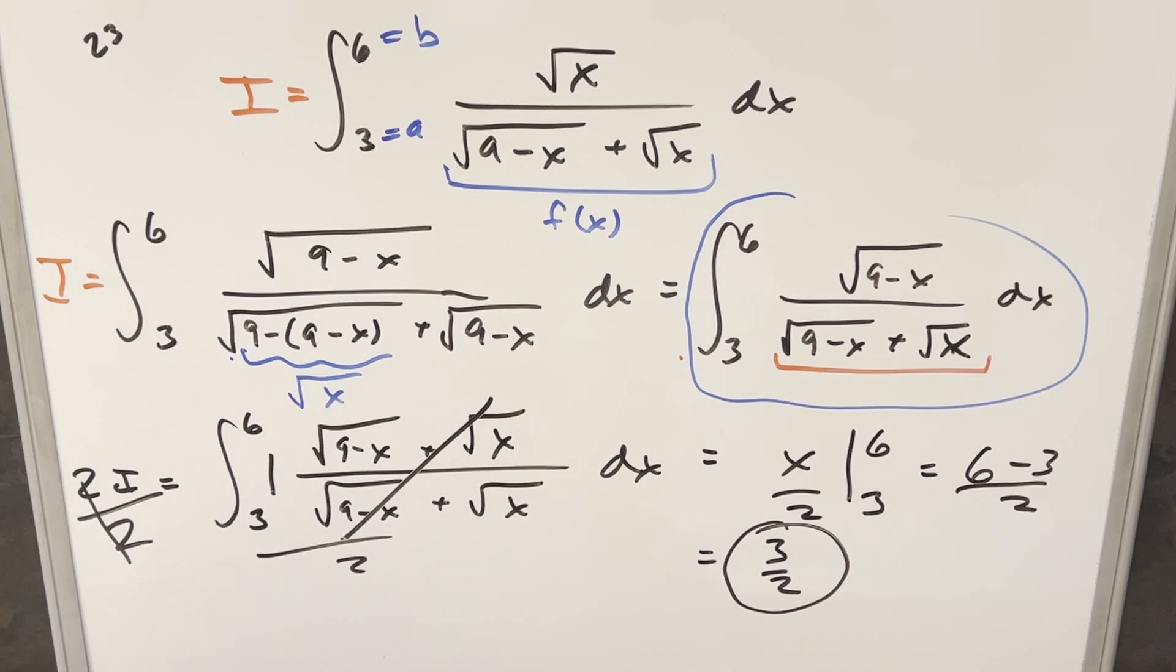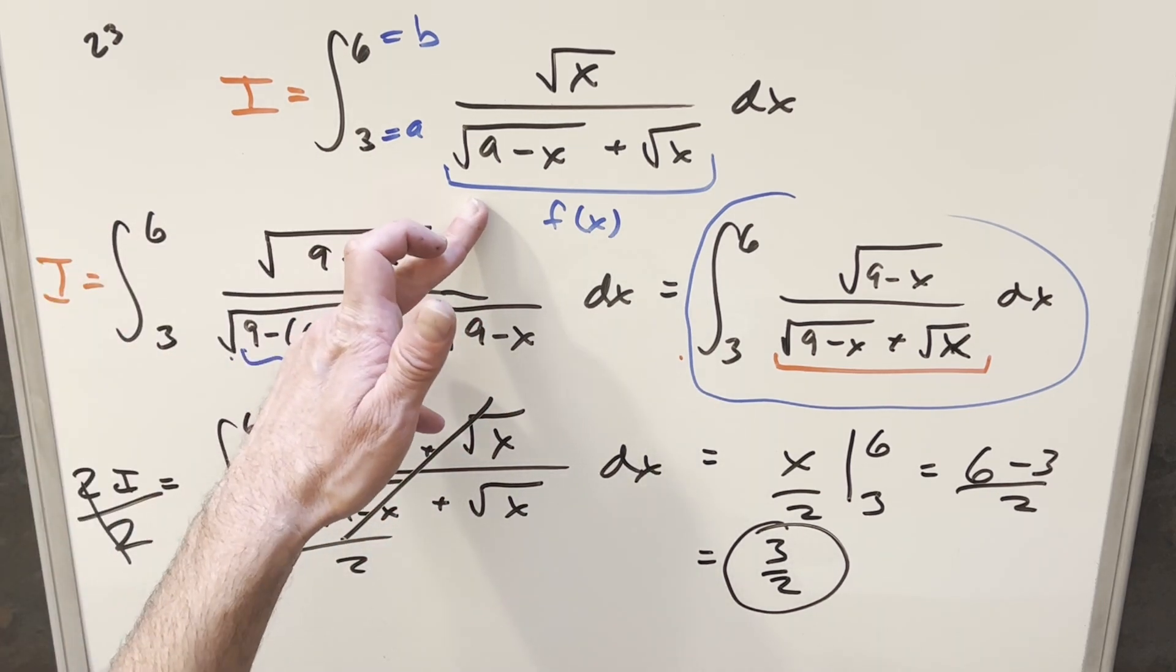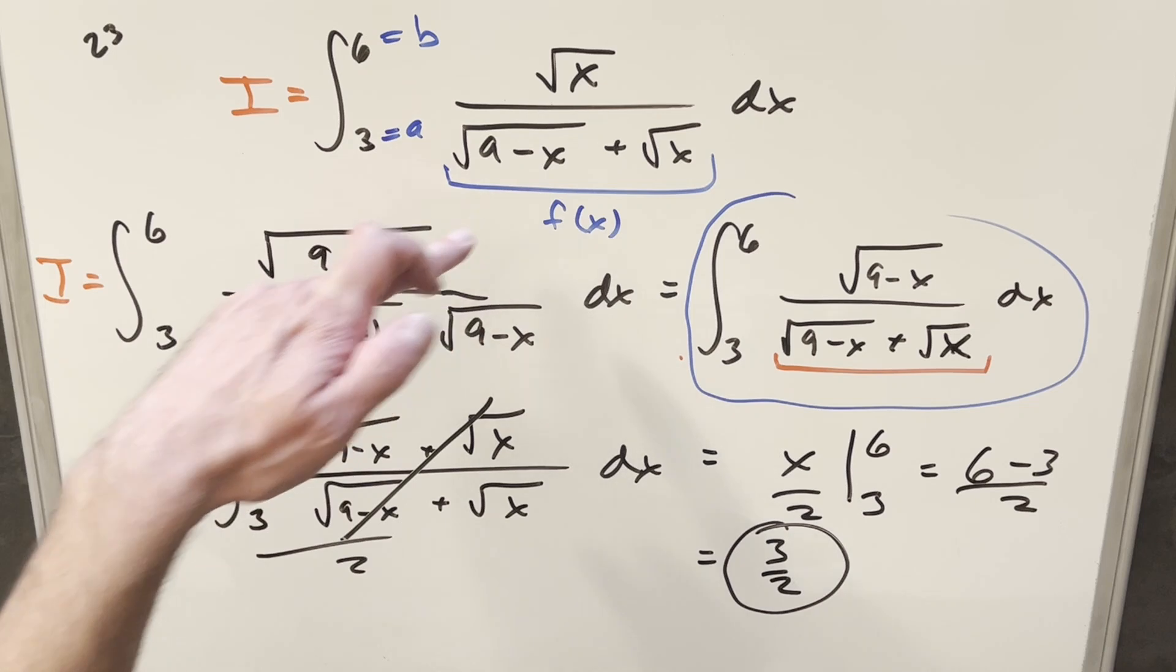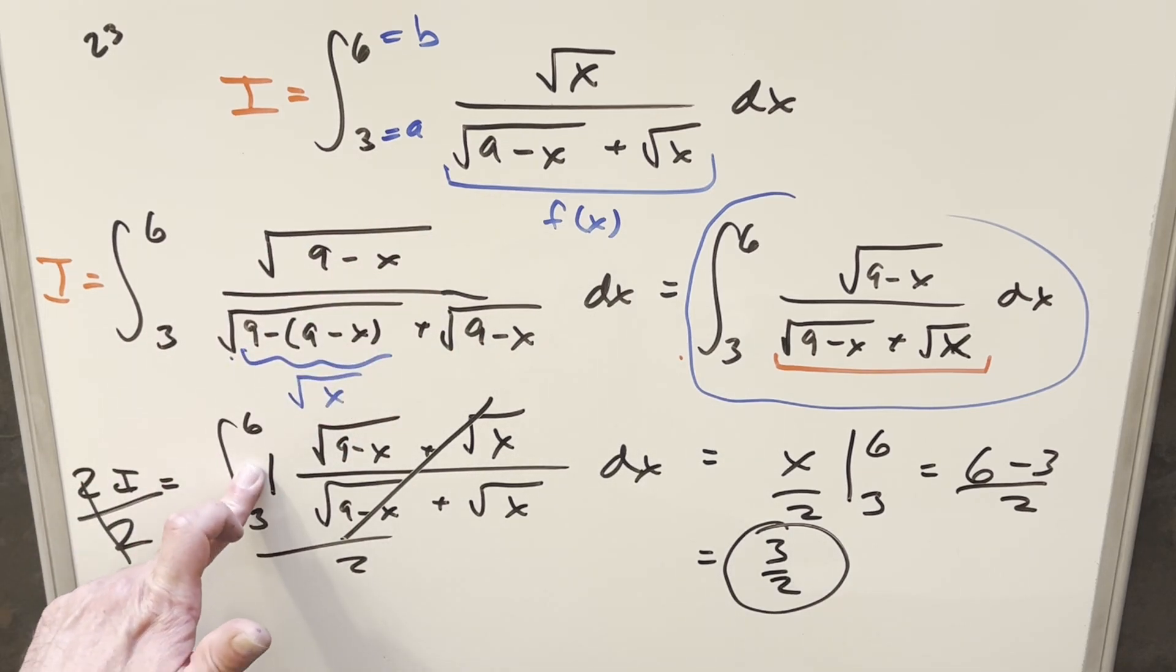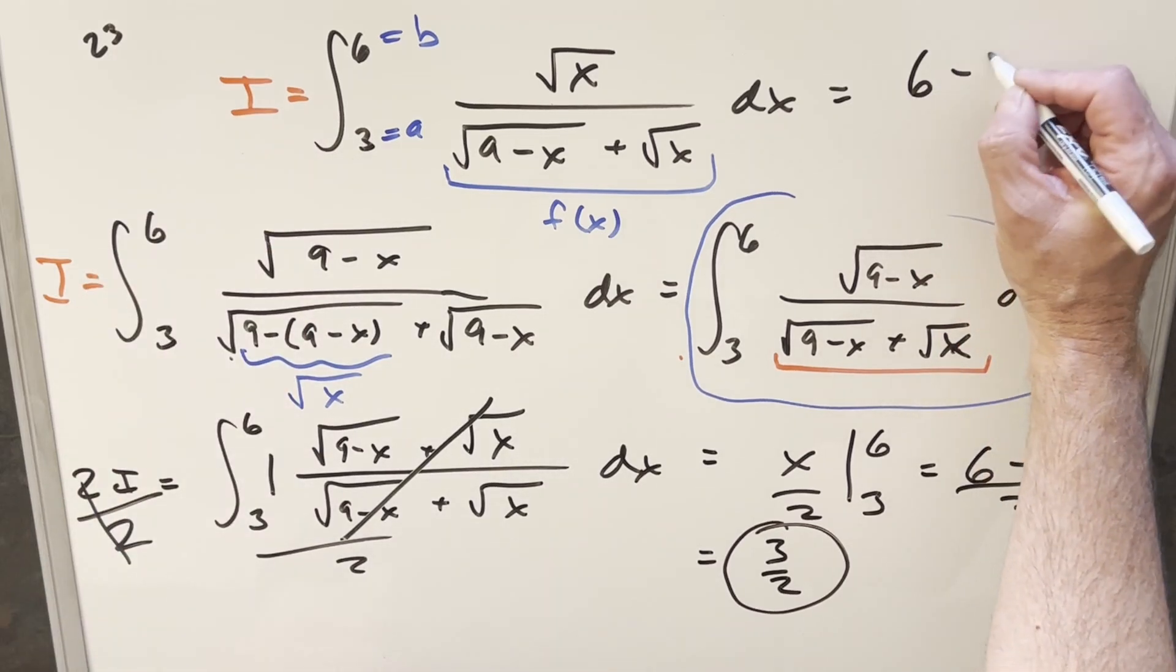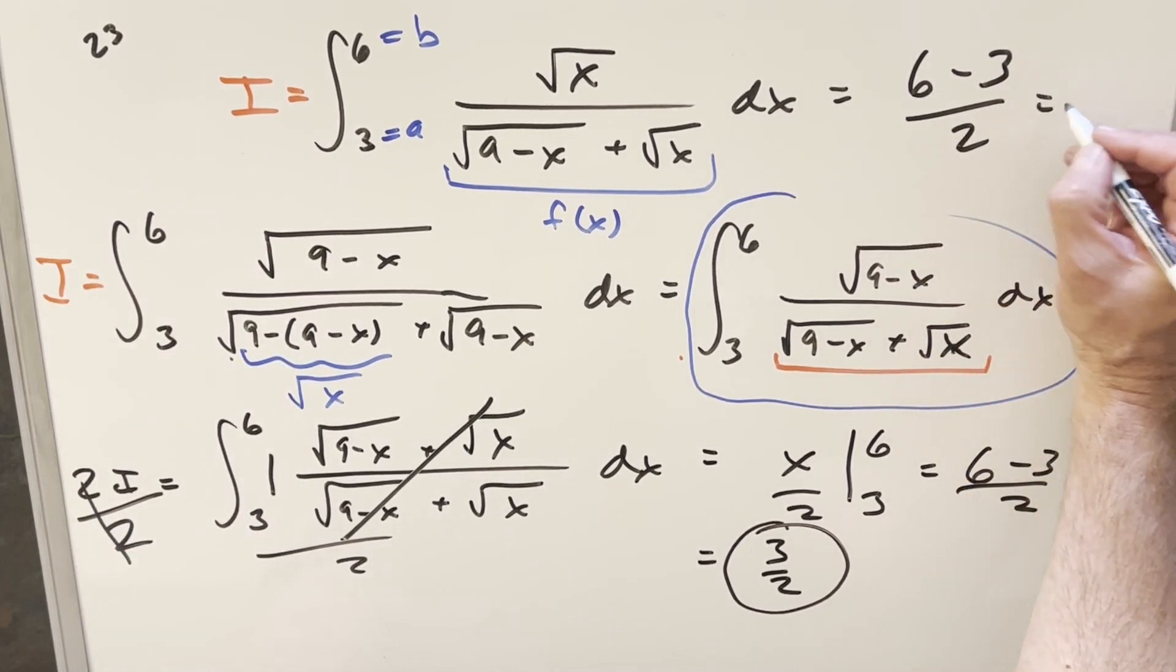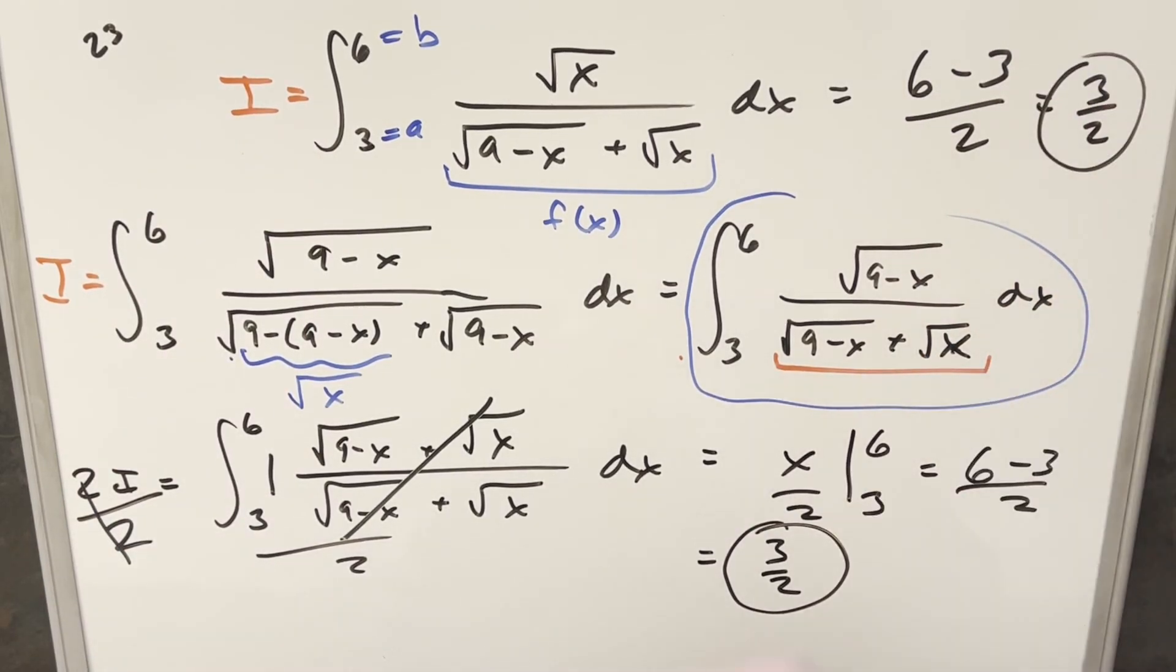And one quick note on this, I did mention earlier that you could do this in three seconds or whatever, just because once you realize it's King's principle, you realize the integral is going to become one. If the integral is one, you basically go to this step, you go straight to six minus three over two, and you get our solution three halves.